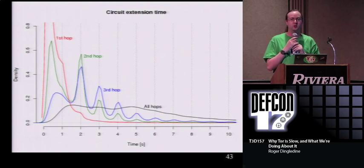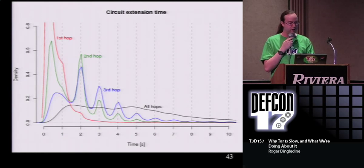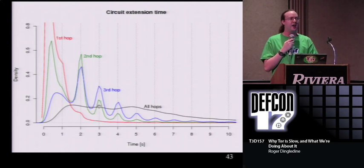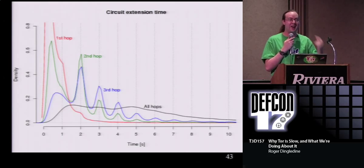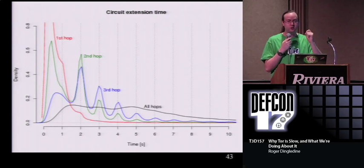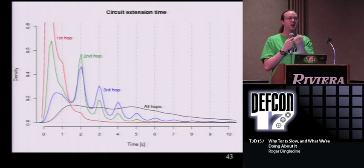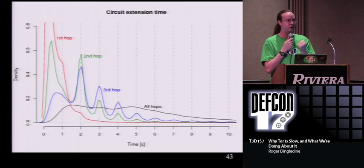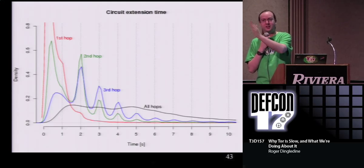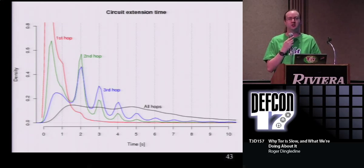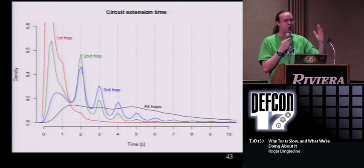Karsten, the fellow who's been doing a lot of these measurements, did a graph of how long it takes to build a circuit. The red one is how long it takes for the first hop to finish, green is the second hop, blue is the third hop. There's this weird hump stuff going on - at the beginning of every second that's when most circuit hops finish. The answer is it's that rate limiting thing: Tor sends bursts of traffic at the beginning of each second, which means if I'm trying to extend my circuit, the response is going to get stuck in some queue and wait until the beginning of a second, get pushed, then get stuck in the next queue and wait again.